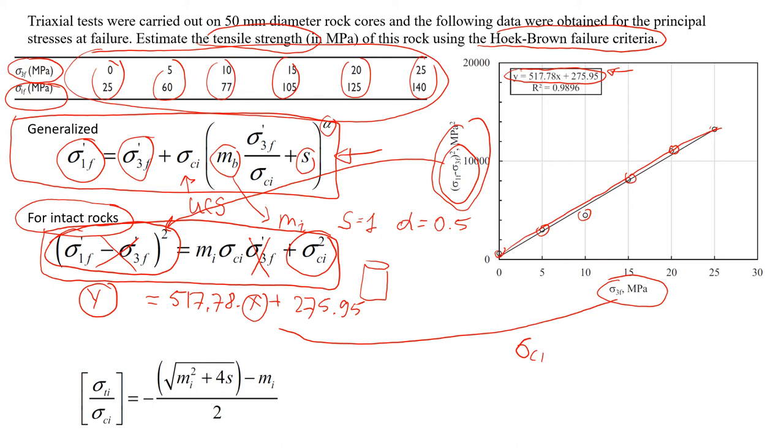So sigma ci. So c means unconfined compressive strength and i stands for intact rocks. In the power of 2, it's equal to 275.95, which will give us that sigma ci will be approximately about 16.6 MPa.